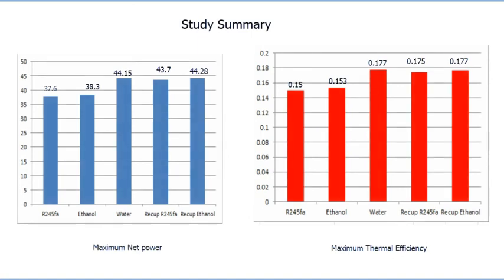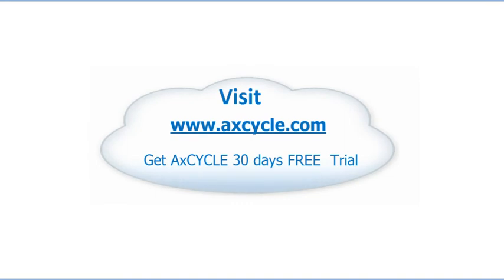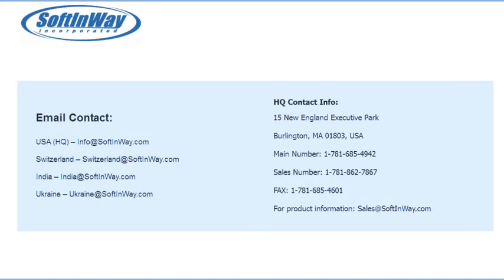Study summary: cycles with recuperation, including the water cycle, are featured with increased net power production and thermal efficiency. Net power varies from 37.6 kilowatts for the simple R245fa cycle up to 44.15 kilowatts for the water cycle. Thermal efficiency varies from 15% for the simple R245fa cycle up to 17.76% for the water cycle. Visit www.actcycle.com and get a free trial for 30 days.